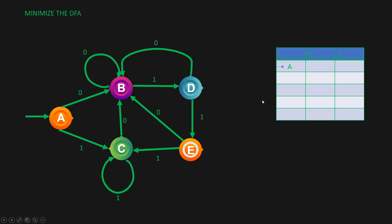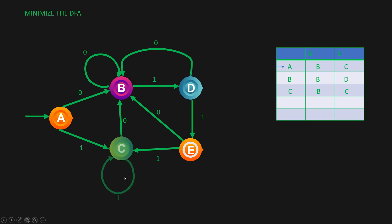We have our starting state A. In starting state A, you get input 0, you go to state B. Then you get input 1, you go to state C. What about state B? You get input 0, you go to state B itself. You get input 1, you go to state D. What about state C? Here in state C, you get input 0, you go to state B. And in state C, you get input 1, you go to state C itself.